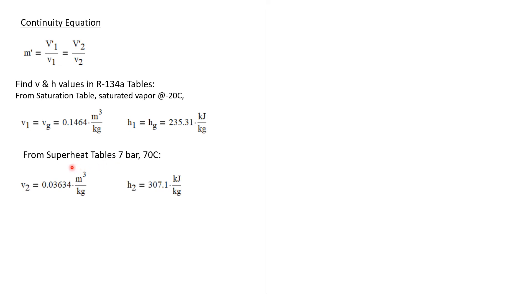Now for state two, we can get the same values in the superheat table at 7 bar and 70 degrees C. We can get a value of V2 and a value for H2.